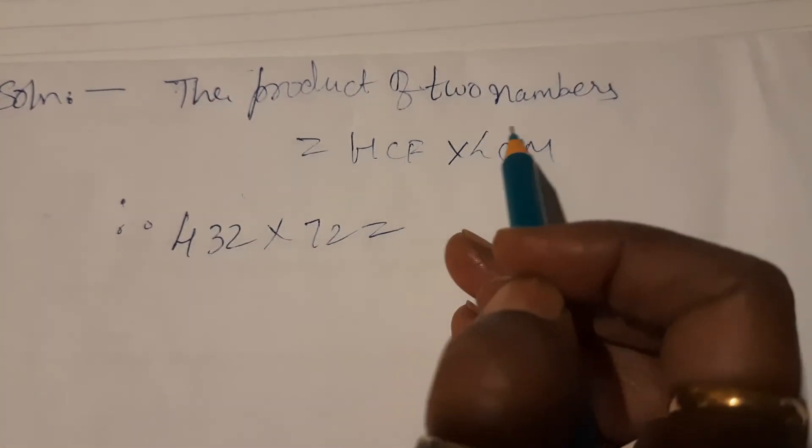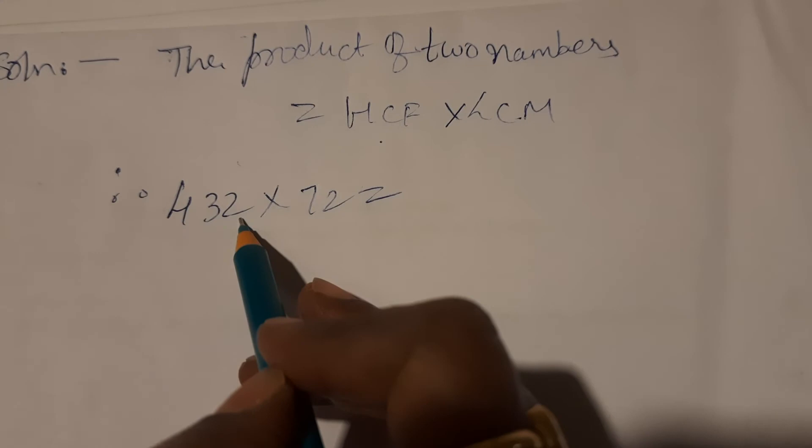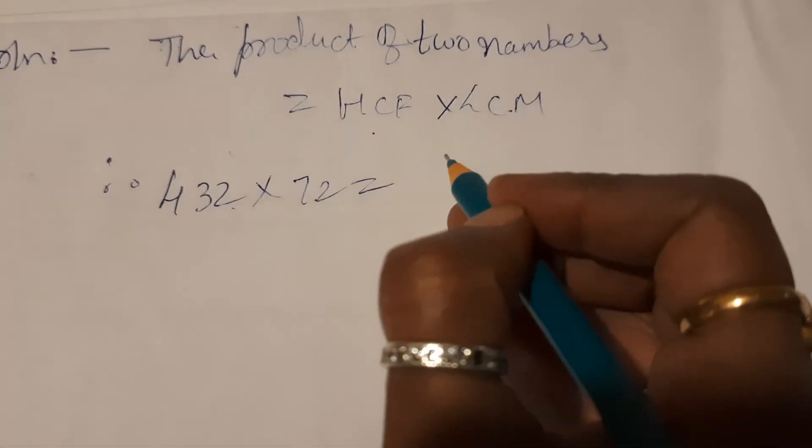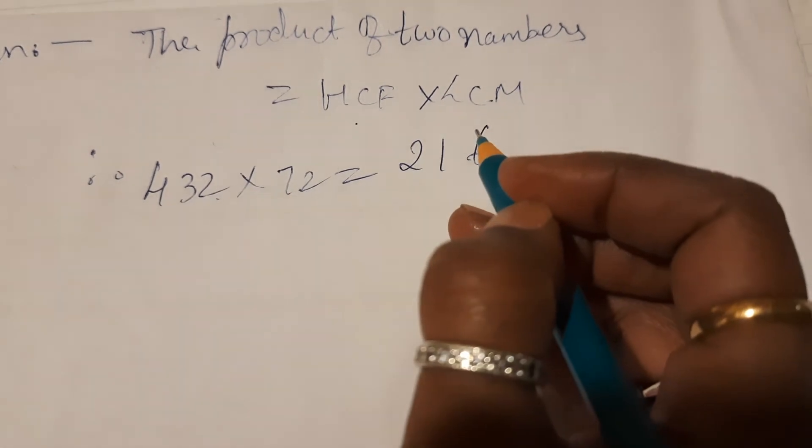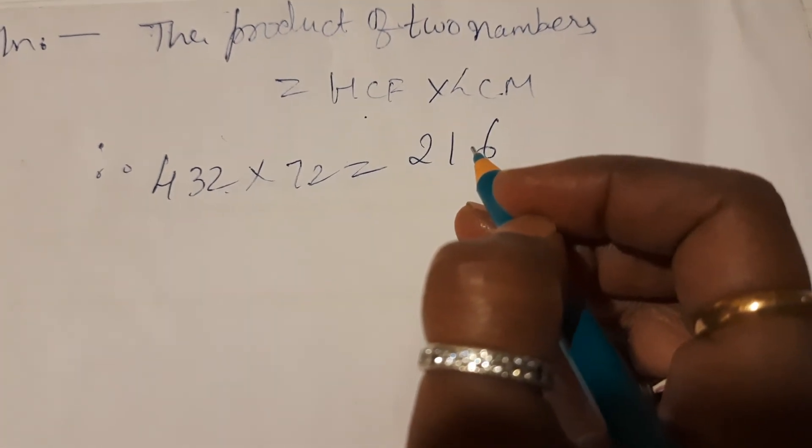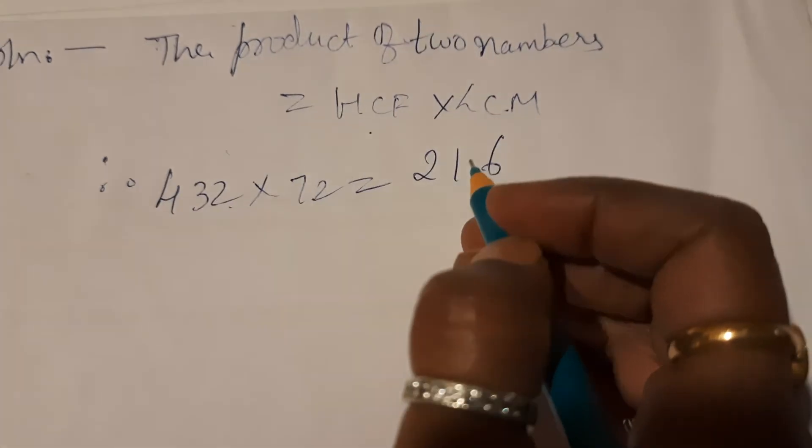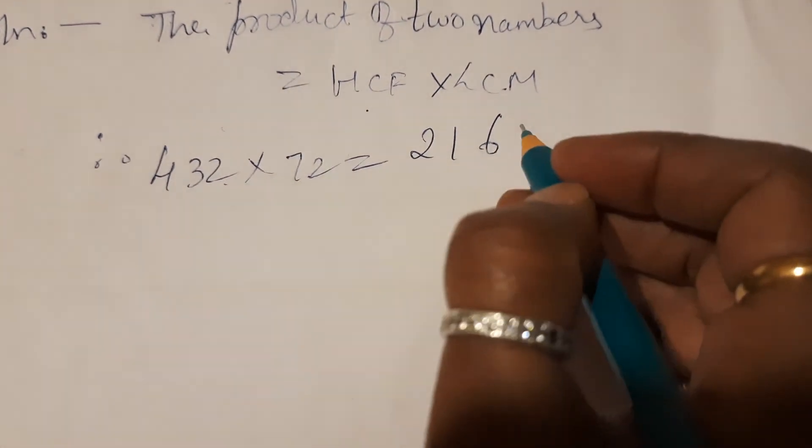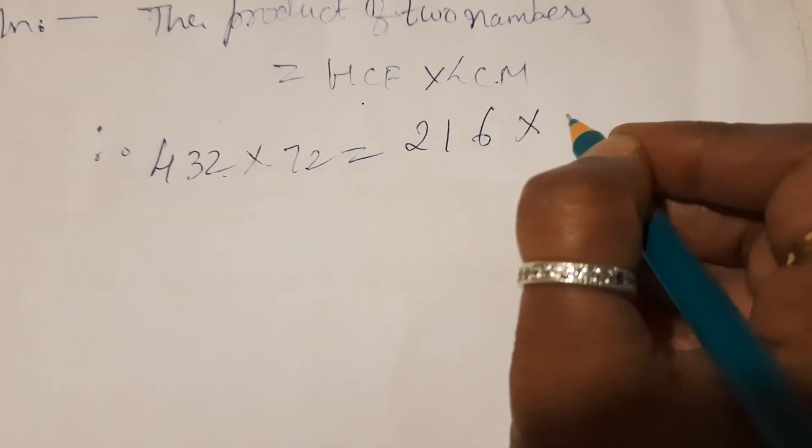So the product of two numbers is equal to HCF into LCM, that is 432 into 72 is equal to 216. If one of the two numbers is 216, what is the other number? So we write down that into X.